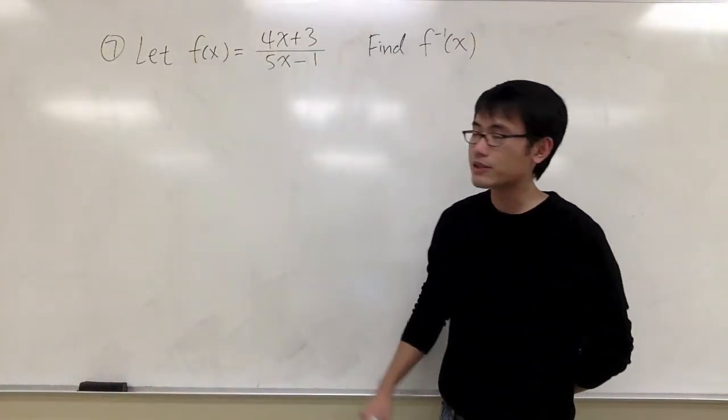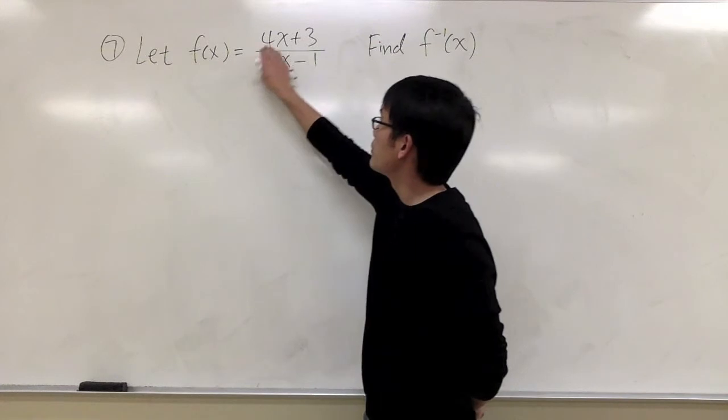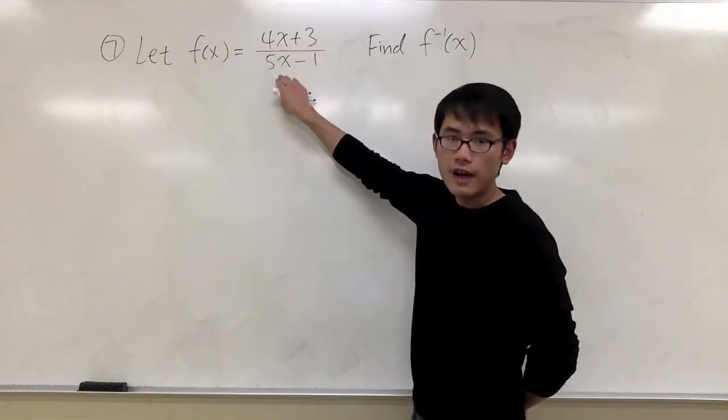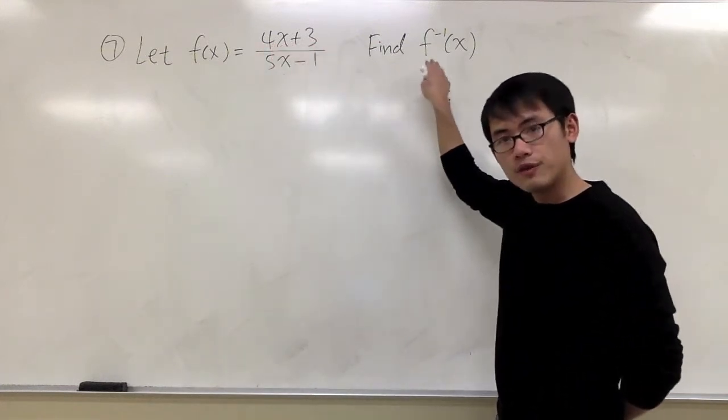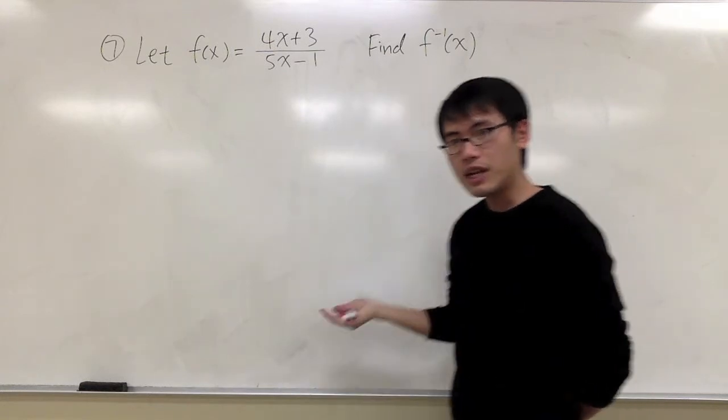For question number 7, we have the function f is equal to 4x plus 3 over 5x minus 1. And our goal is to find an equation for its inverse.